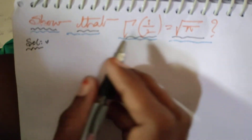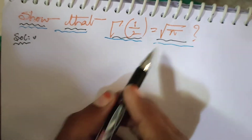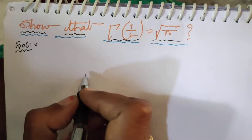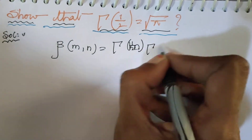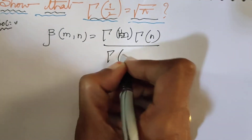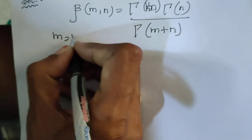Here we have to prove this result using the relation between the Beta and Gamma functions. The relation is: Beta(m, n) equals Gamma(m) times Gamma(n) divided by Gamma(m+n). We choose m equals 1/2 and n equals 1/2.